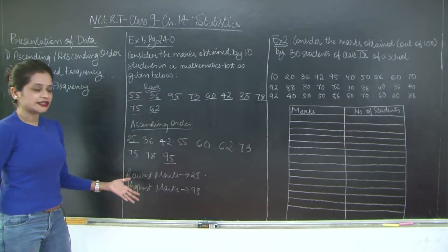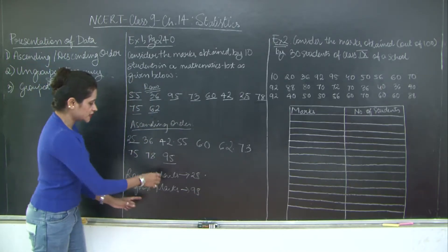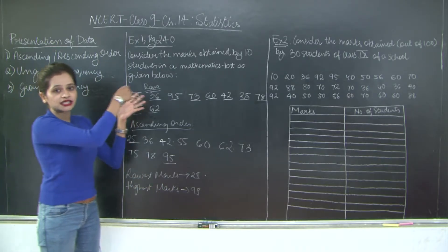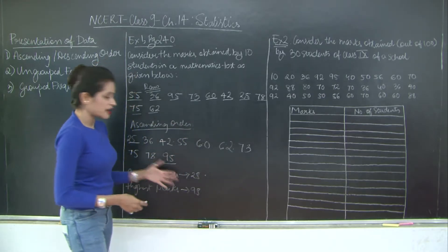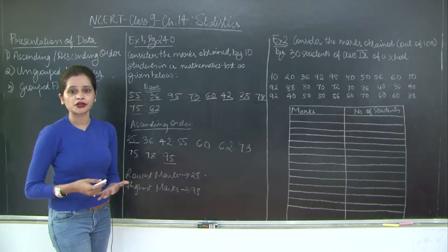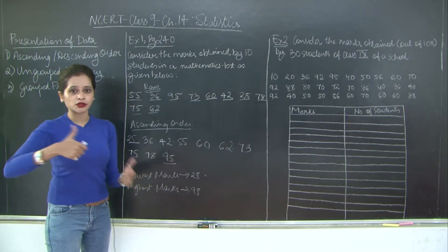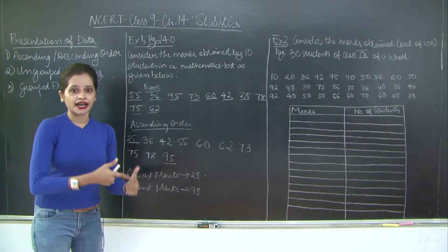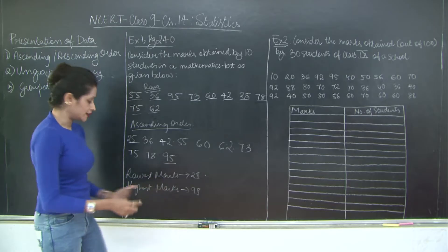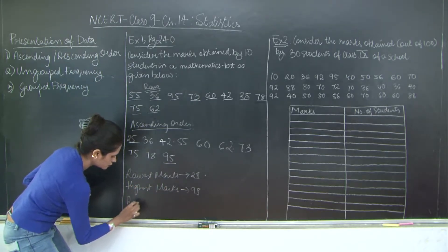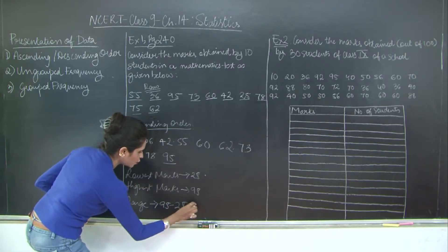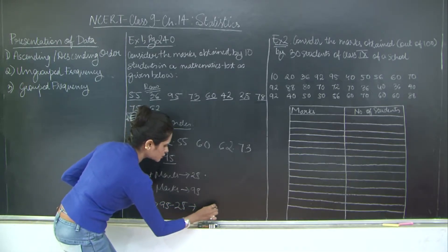See how simple this was, right? Now the difference between the lowest marks and highest marks is called the range. So now this was since we were dealing with the marks secured by students, we say lowest marks and highest marks. But it would not always be marks. You can either say the difference between the lowest observation and the highest observation is going to give you the range. So range is 95 minus 25 which is 70. And this is the difference between the highest and lowest observation.